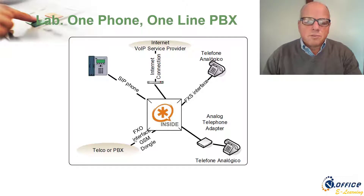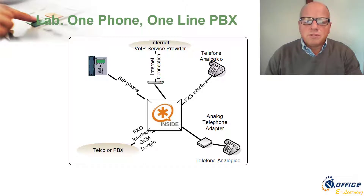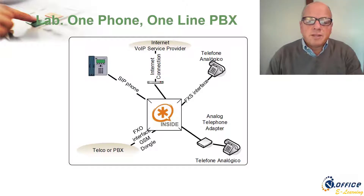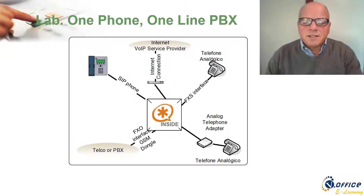To connect to a telco or PBX, you need an FXO interface. You can buy FXO interfaces — there's actually a very cheap one, a single FXO interface that is a very old modem type; some Chinese companies still produce them. Recently, some people are using the GSM dongle — a GSM card in a USB stick compatible with a driver called the chan_dongle.